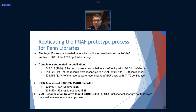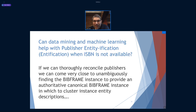60% do not have ISBN. About 10% of publisher entities with no ISBN were matched in a semi-automated process — almost 10%. So if we have no ISBN, this reconciliation process can grab about 10% of those, which for data mining is a start. The next step — which is the remainder of this talk — is really how could I use data mining and machine learning to help with publisher entification when you don't have an ISBN or the ISBN is null.